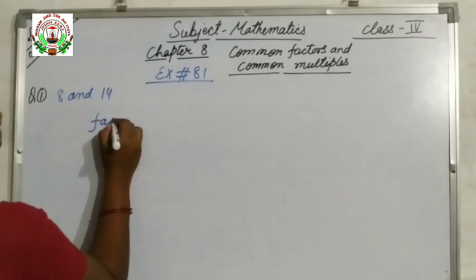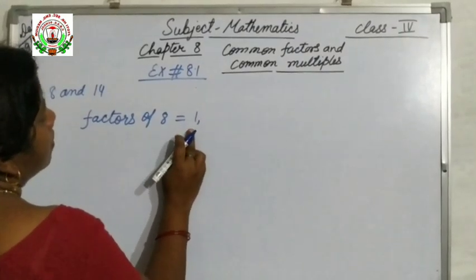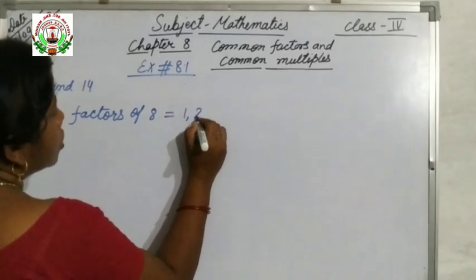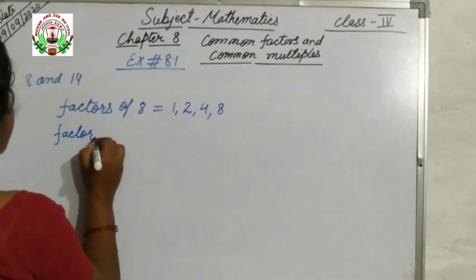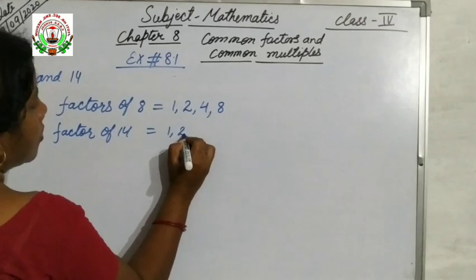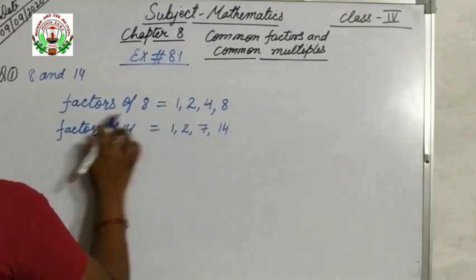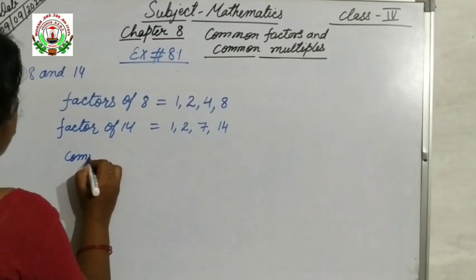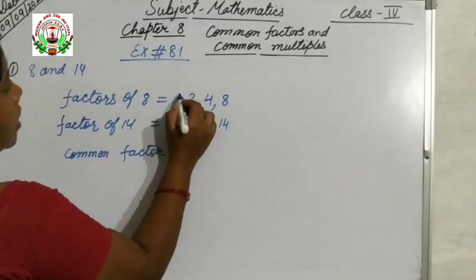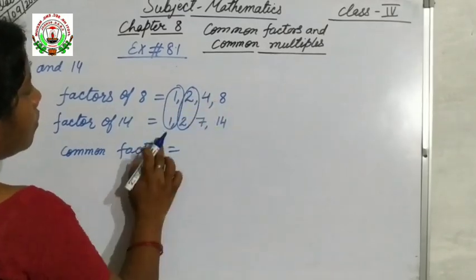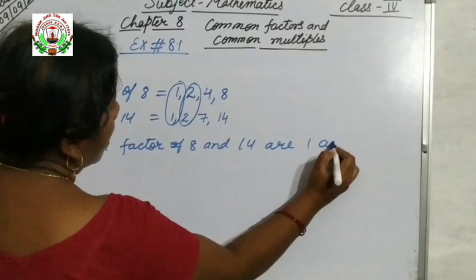First we will find the factors of 8. Factors of 8: 1 is a factor of every number. Then factors of 14: 1, 2 times 7 is 14, then 7 times 2 is 14, and 14 times 1 is 14. So factors of 8 and factors of 14 are listed. Now we will find the common factor — common means which number is similar in both. Here, 1 and 2 are present in both. So the common factors of 8 and 14 are 1 and 2.